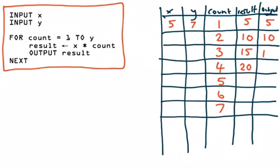I forgot to write out the output there. So it's going to output the result, which is going to be 20. Then it's going to do result equals X, which is 5, times count, which is 5, equals 25. It's going to output the result, which is 25.